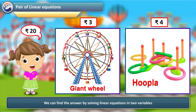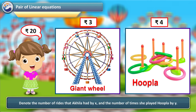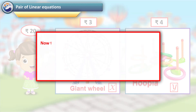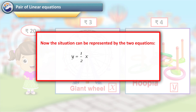We can find the answer by solving linear equations in two variables. Denote the number of rides that Akhila had by x and the number of times she played hoopla by y. Now the situation can be represented by the two equations: y is equal to half x — equation 1, and 3x plus 4y is equal to 20 — equation 2.